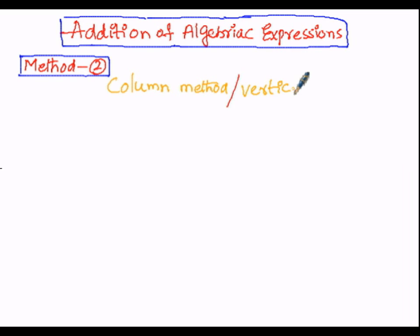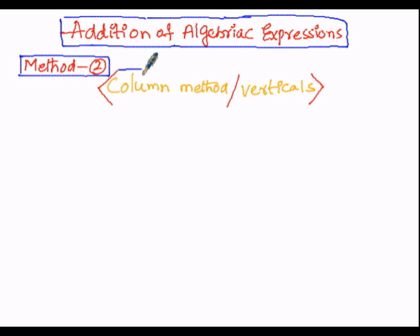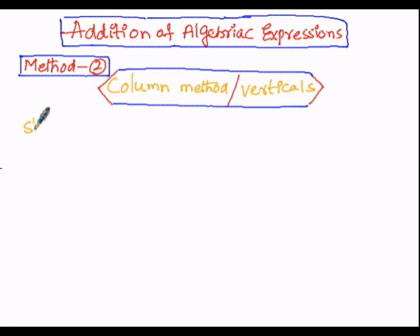In the column or vertical method, first we arrange all the terms in the given expressions either in descending order or ascending order of powers of the variables. Then we arrange all the given expressions in the form of rows such that all the like terms come under the same columns. Then we combine all the like terms column-wise by taking care of their signs. This is the procedure to perform addition of algebraic expressions by the column method.